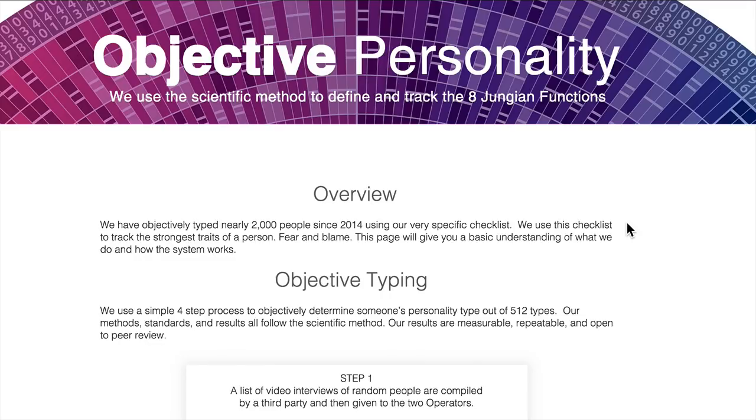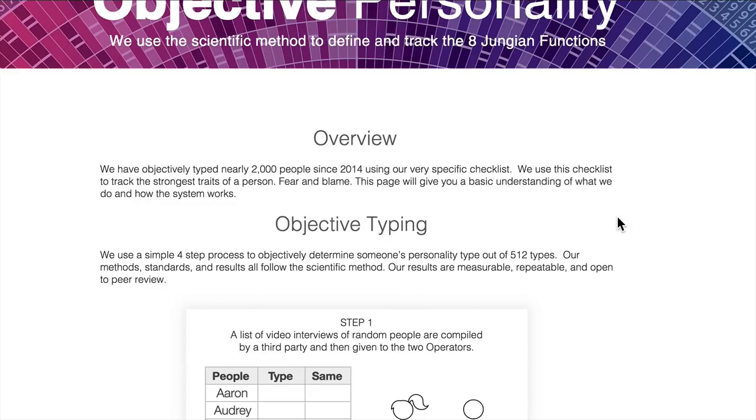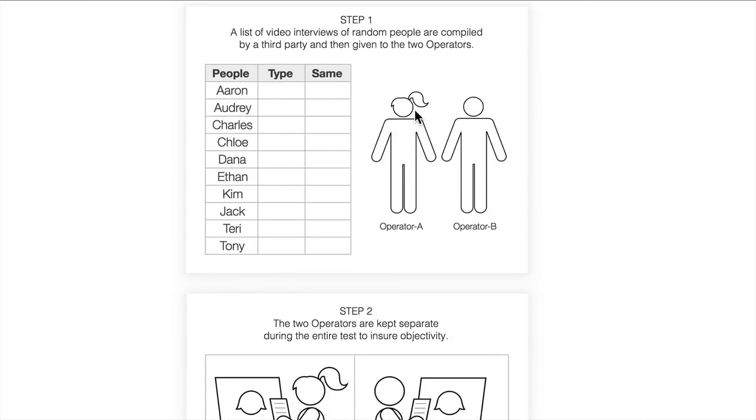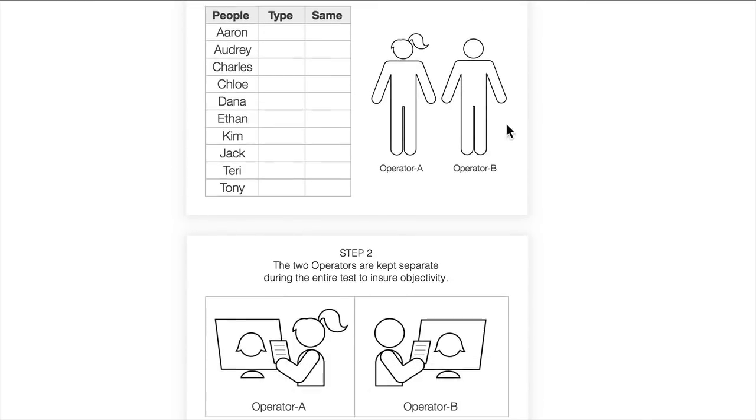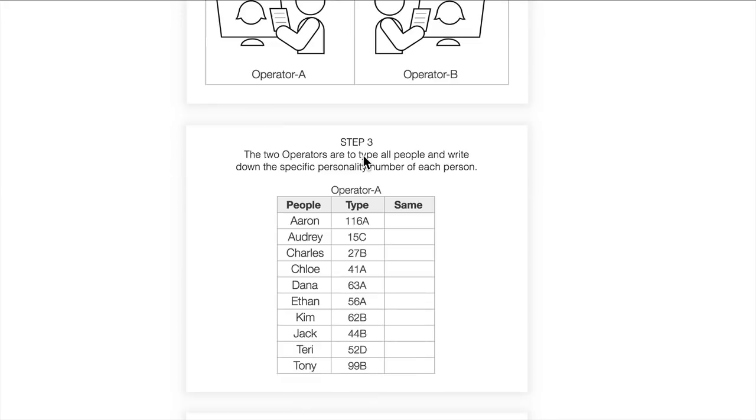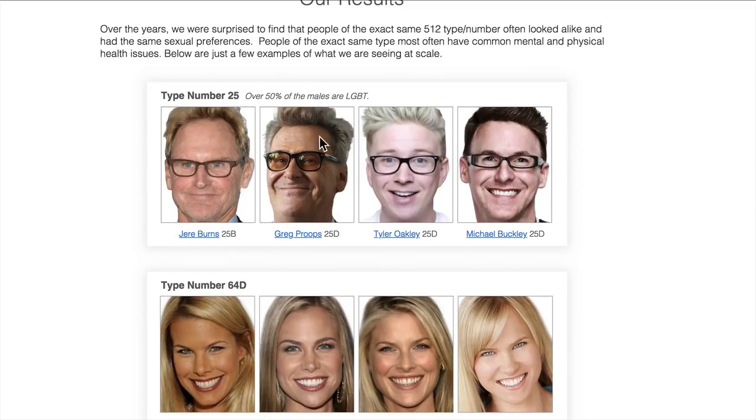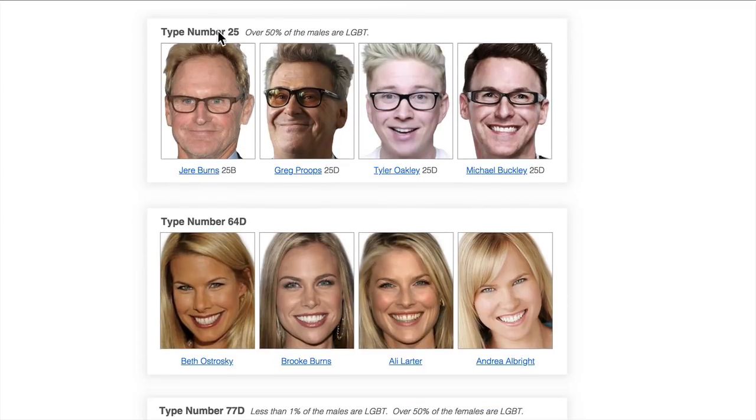Alright, this is just a little website walkthrough. The homepage has some useful information for putting together all this code stuff. At the top here, we have our summary of how we do this objective typing where we have two different people in two different rooms, and we play this little game to get the same type.